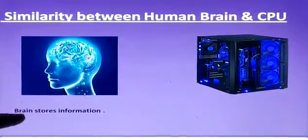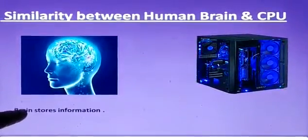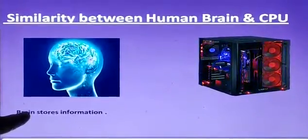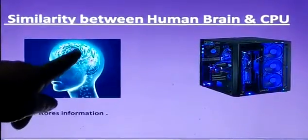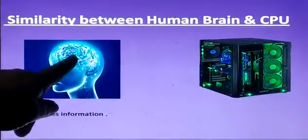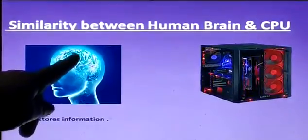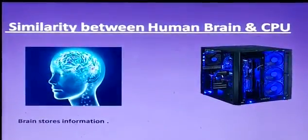Brain stores information. Suppose we have learnt chapter 1 of computer, then it stores in our mind. So what does brain do? Brain stores our information.